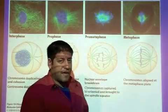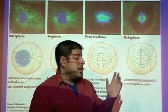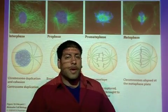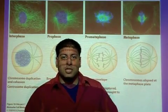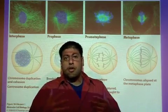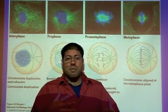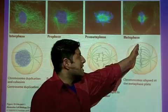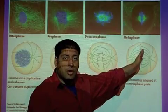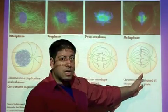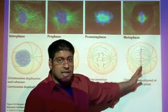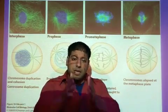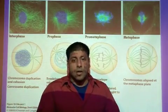In metaphase, the microtubules make connections to the chromosomes and push and pull them in different directions, eventually lining up the chromosomes down the middle of the cell.